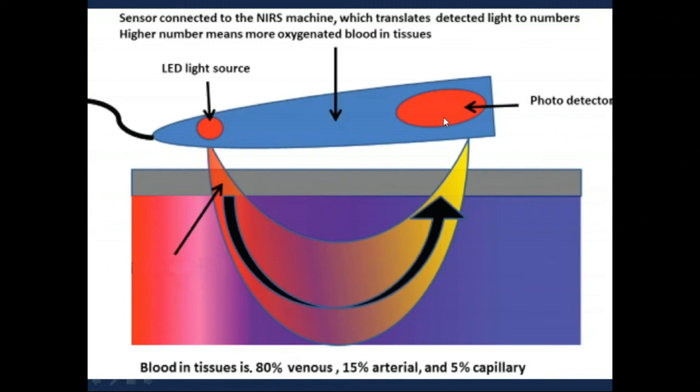And then received by another photodetector here, which will detect the amount of hemoglobin combined to oxygen in the tissues, which as I mentioned is mainly venous. So the number on the machine will be reflecting mainly the venous oxygen saturation.